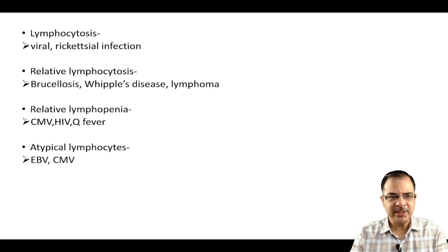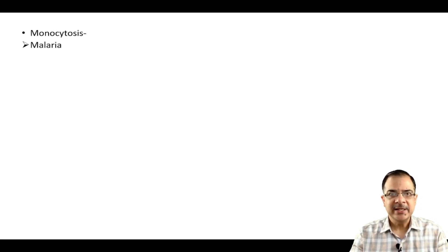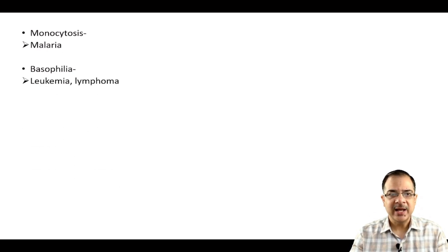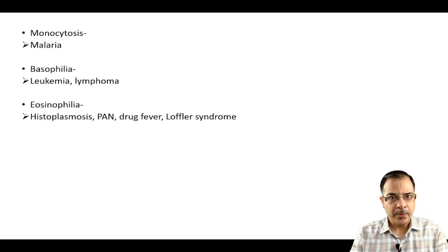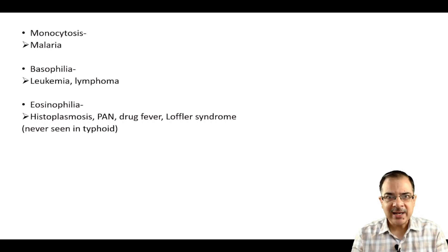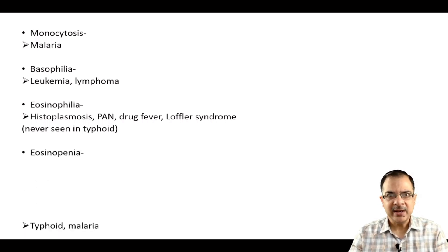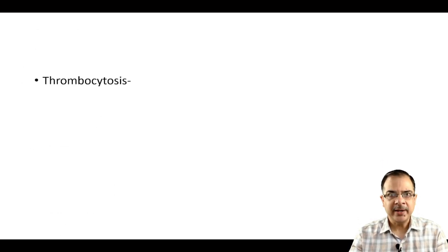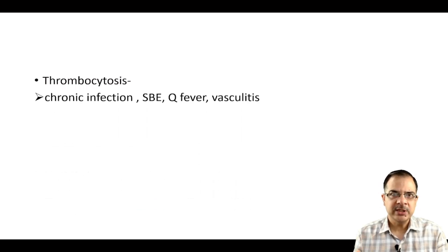Atypical lymphocytes are seen in Epstein-Barr virus disease. Monocytosis is typically seen in malarial fever. Basophilia is characteristic of blood malignancies like leukemia or lymphomas. Eosinophilia is seen in histoplasmosis, polyarteritis nodosa, drug-induced fever, or Löffler syndrome. Importantly, eosinophilia is never seen in typhoid — in typhoid, eosinopenia is present — so eosinophilia becomes a negative diagnostic finding for typhoid.